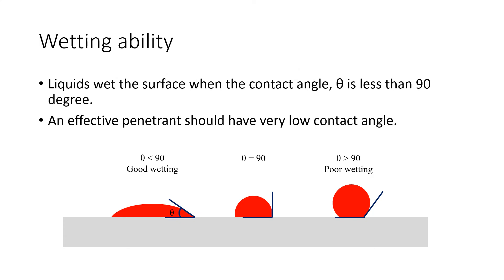As we can see from the equation of capillary pressure, the effectiveness of a penetrant is affected by its surface tension. To quantify a liquid's surface wetting characteristic, we can measure the contact angle of a drop of liquid placed on the surface. A liquid wets the surface when the contact angle theta is less than 90 degrees. In the figure, three different liquid drops are shown: when theta is less than 90 degrees it shows good wetting, while when theta is greater than 90 degrees it shows poor wetting. An effective penetrant should have a very low contact angle, almost equal to zero.